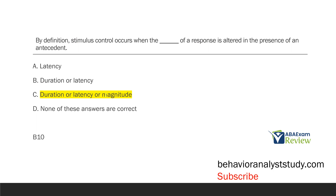Why is that precision important? Because you want to be precise on your exam. In practice, when we talk about things like stimulus control, we often get more abstract to make it make sense to stakeholders and technicians. But stimulus control is one of those things where, for your exam, you want to get very precise. Yes, this is more or less a definition question, but it's important for your exam to keep you focused and specific. By definition, stimulus control occurs when the duration or latency or magnitude of a response is altered in the presence of an antecedent.